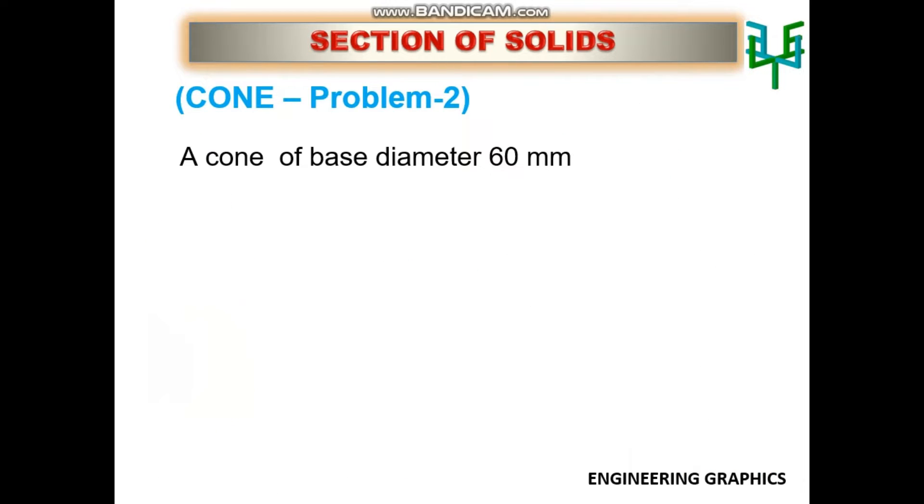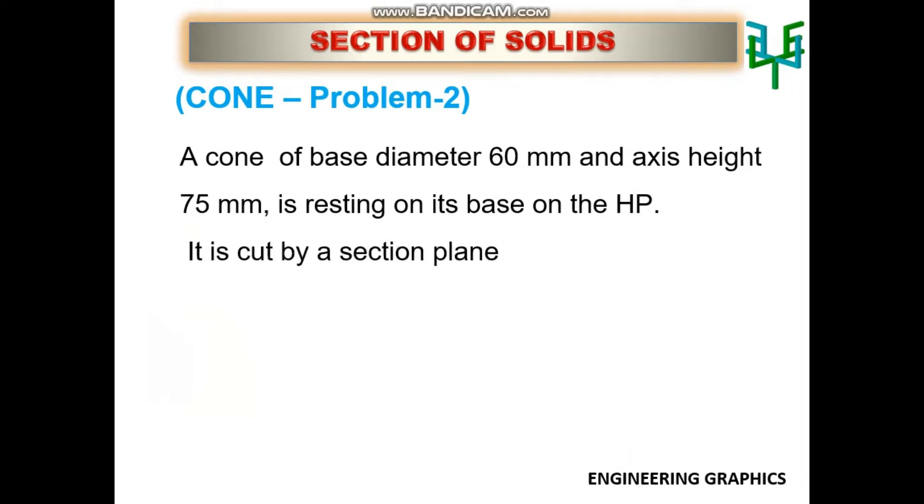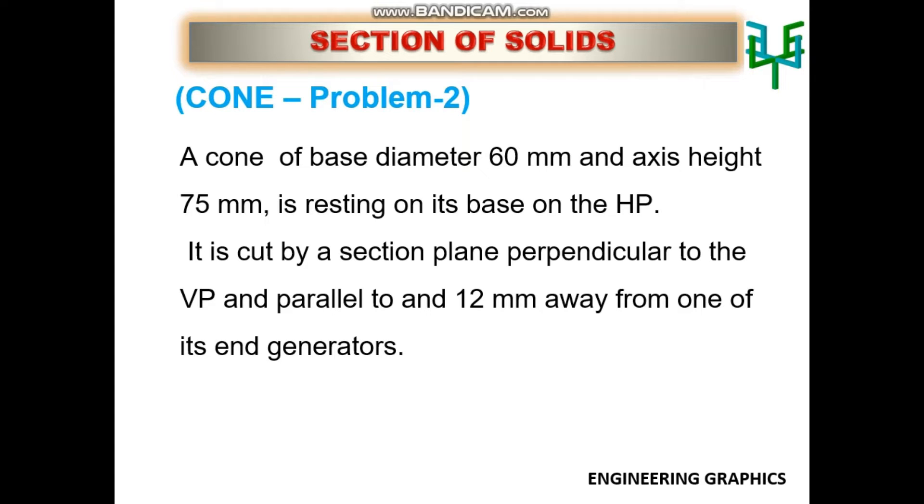A cone of base diameter 60 mm and axis height 75 mm is resting on its base on the HP. It is cut by a sectional plane perpendicular to VP and parallel to and 12 mm away from one of its end generators. Draw the sectional plane and true shape of the section.